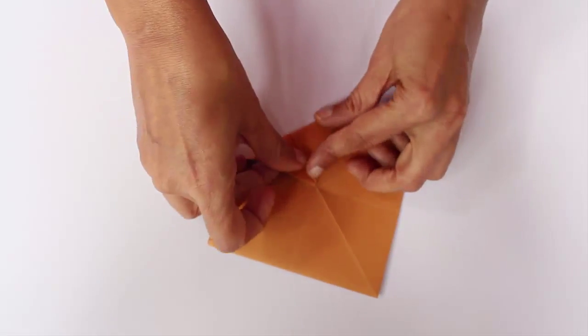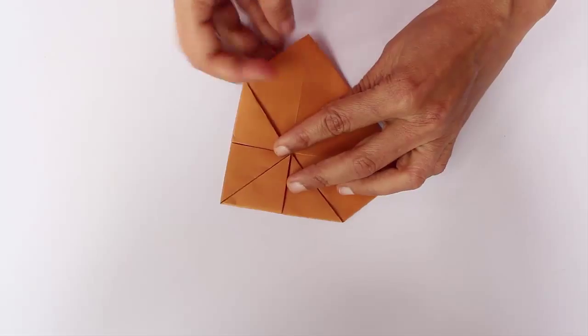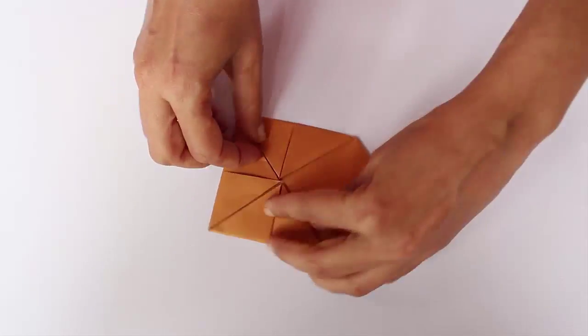Then upturn the paper and once again fold all the four corners to the center to make the second envelope.